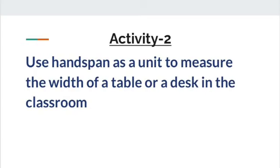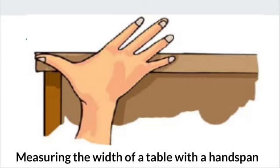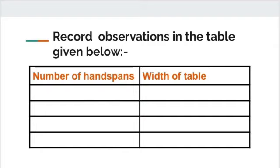Activity number 2: Use hand span as a unit to measure the width of a table or a desk in the classroom. After measuring, record all the observations in the table given below. Write the number of handspans and width of the table. For example, if the width of a table is equal to 4 handspans, then write: number of handspans is equal to 4.